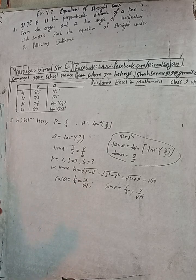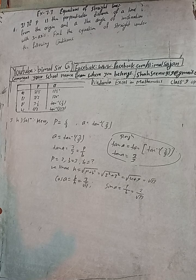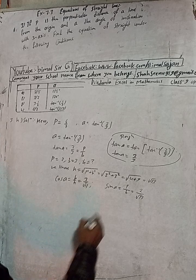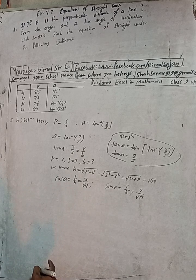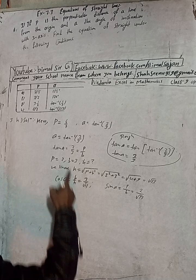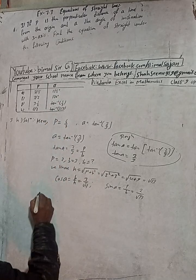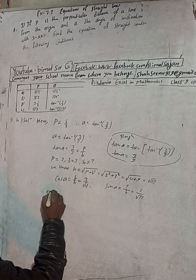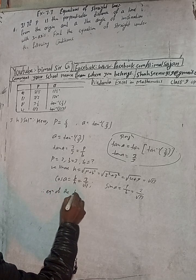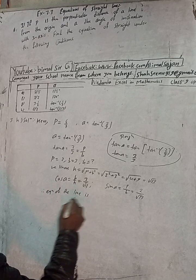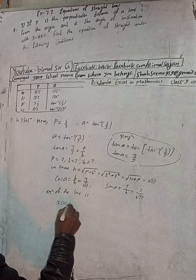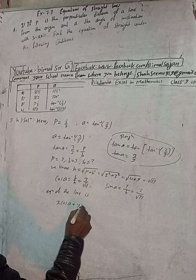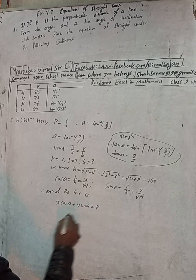Now cos alpha is 3 by root 13 and sin alpha is given. Now we can write the equation. Therefore, the equation of the line is x cos alpha plus y sin alpha is equal to p. This is the formula.